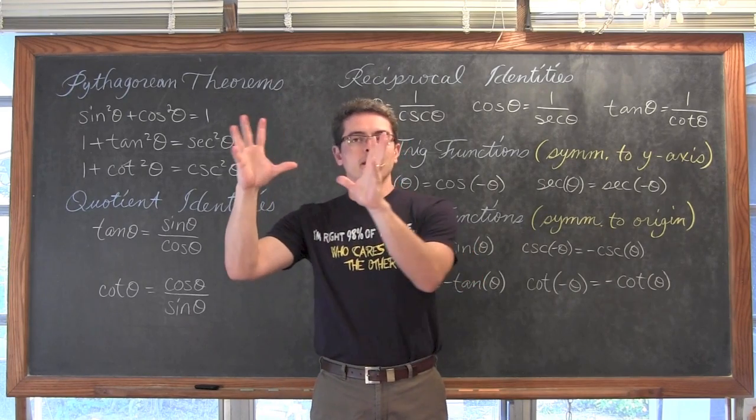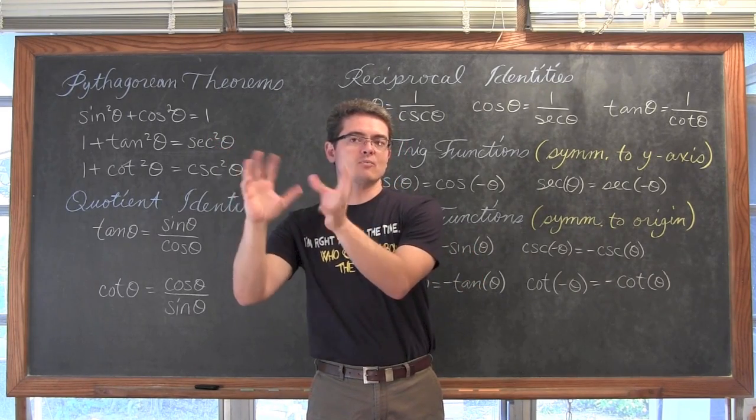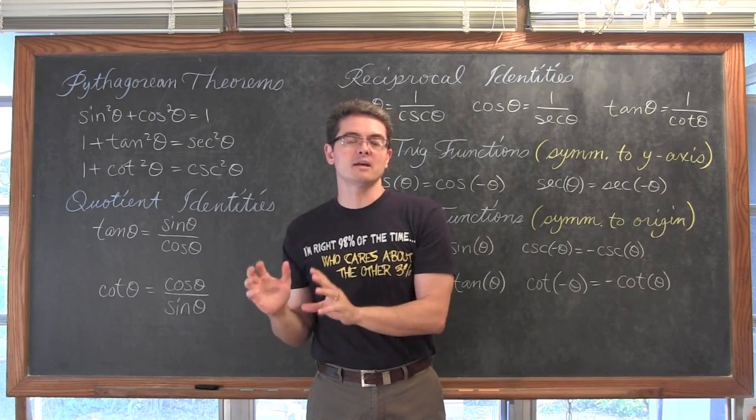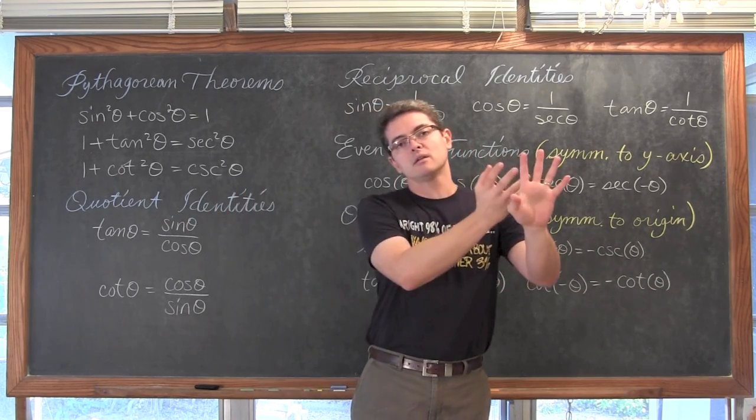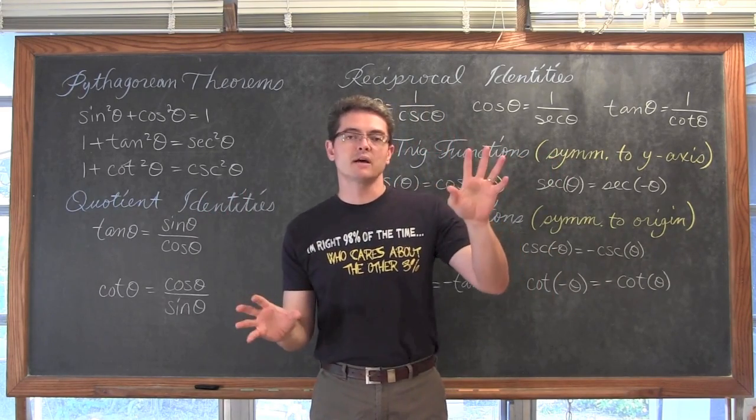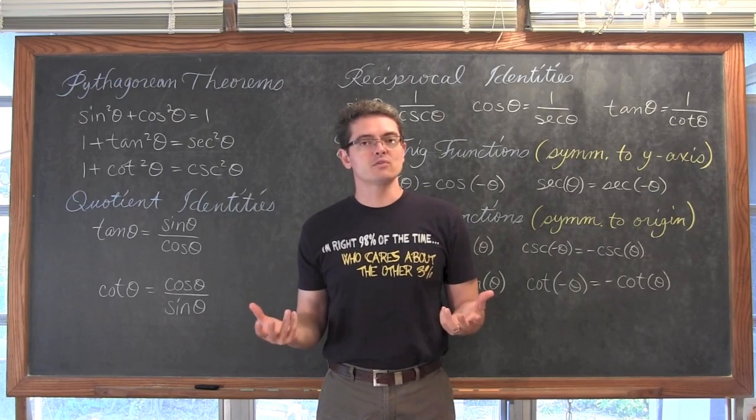So we are going to be basically doing some algebraic manipulation to one side of the identity to make it look like the other side. When you get the two sides to match, well then you are done with your trig proof.